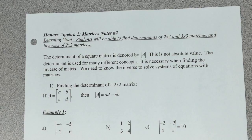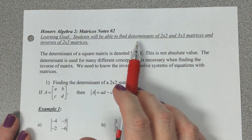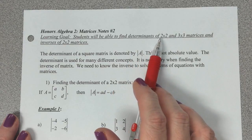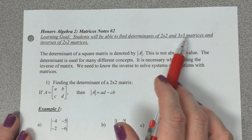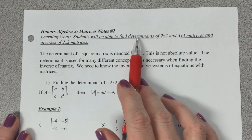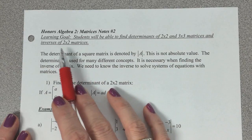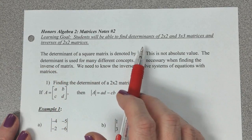Day two of matrices. Our learning goal is we want to be able to find something called the determinant of the matrix. We're going to be looking at the determinants of two-by-two matrices and three-by-three matrices. The reason we learn about determinants is because they're used to find inverses, and then the inverses can be used to solve those very difficult systems.